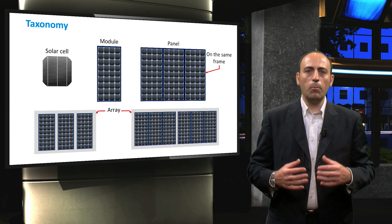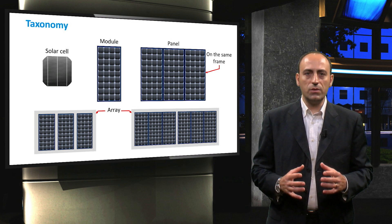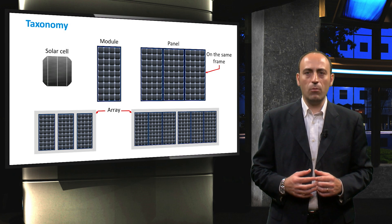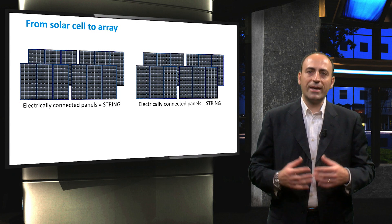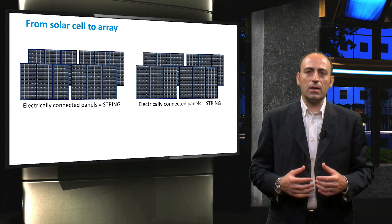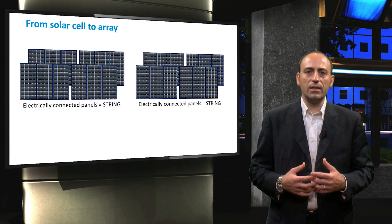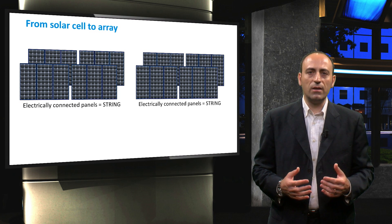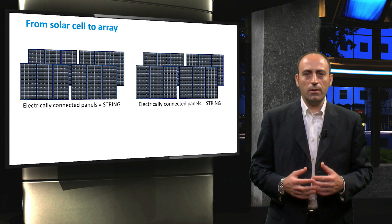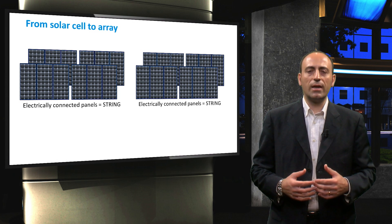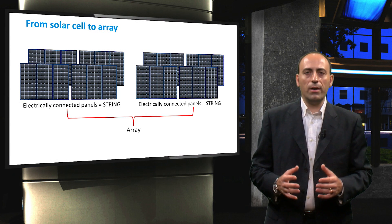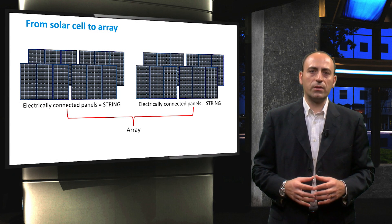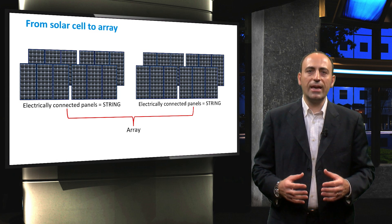A photovoltaic array is the complete power generating unit, consisting of any number of PV modules and panels that are mechanically independent. Apart from the mechanical connection, panels also need to be electrically linked through cables. Multiple panels that are electrically connected are called a string. The panels in a string are usually connected in series to obtain a desired output voltage.